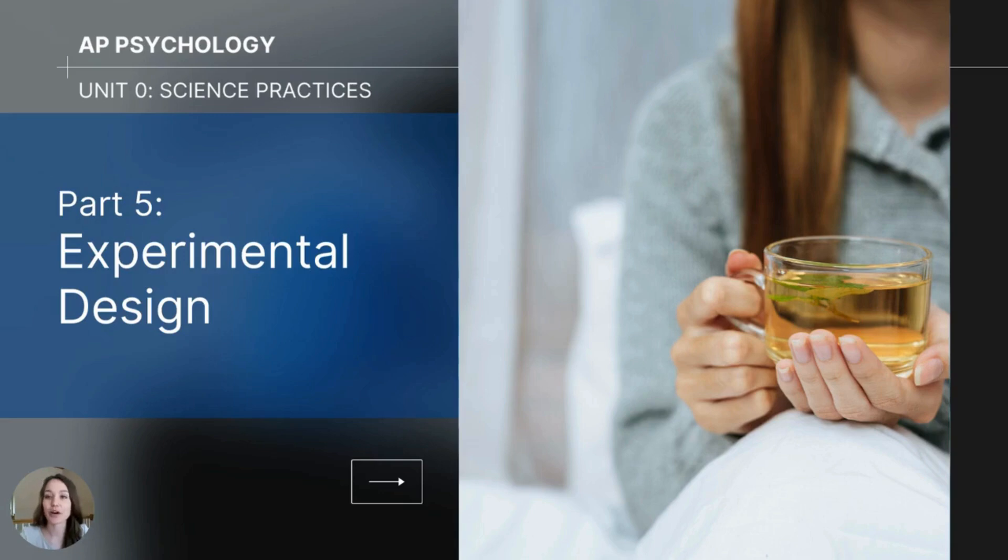Hi everyone, this video is the fifth part of my unit zero science practices series for AP psychology students. At this point you have a general understanding of how psychologists conduct different types of research methods. In this particular video I will go into detail about one of those methods, which is called experimentation.